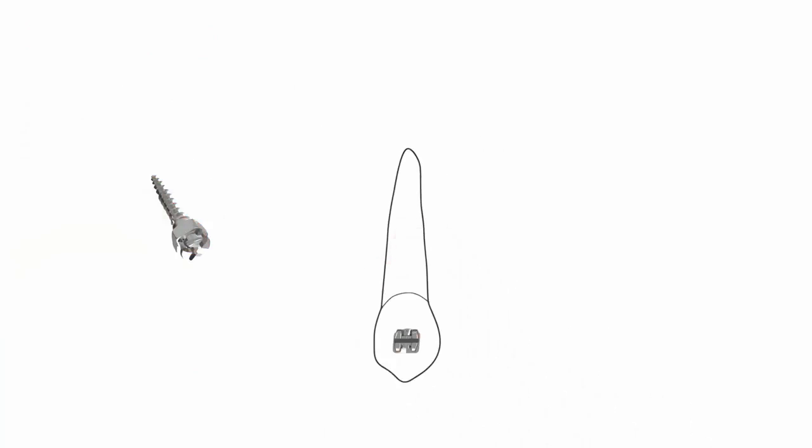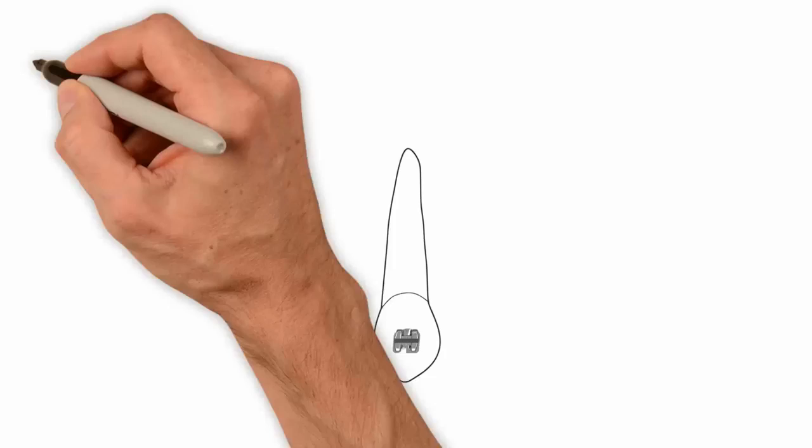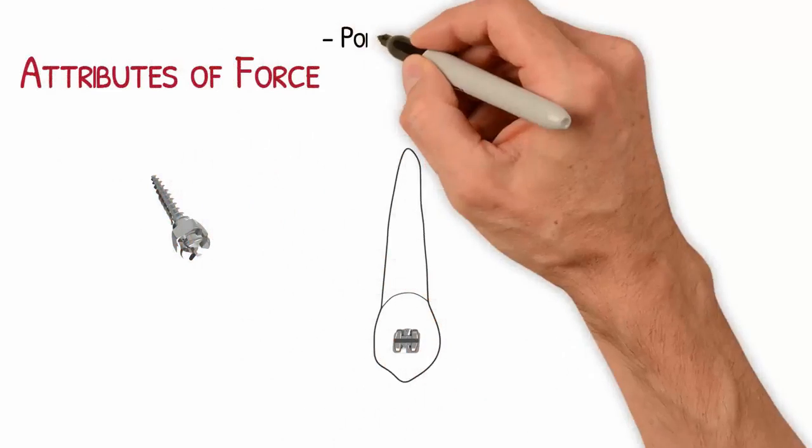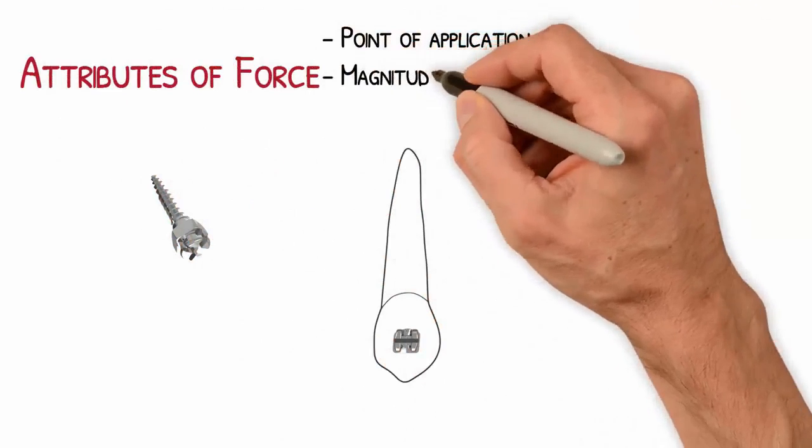In order to understand the orthodontic force, we need to know that it constitutes a vector quantity, so its definition requires the awareness of three essential attributes. They are the point of application of force, its magnitude, and its direction and sense.